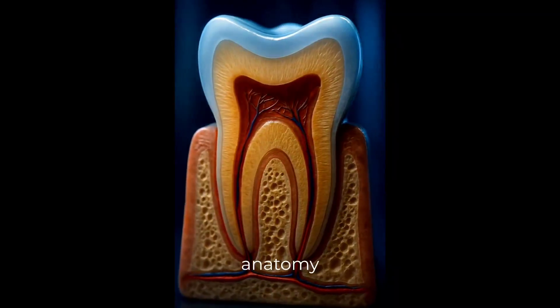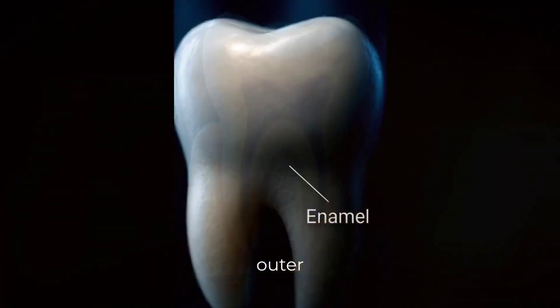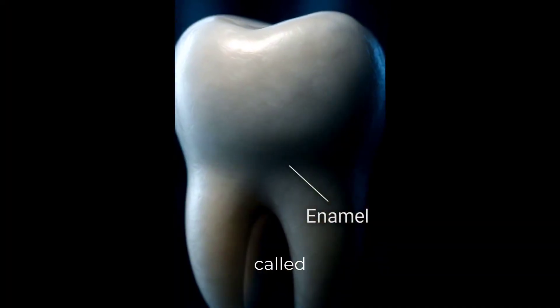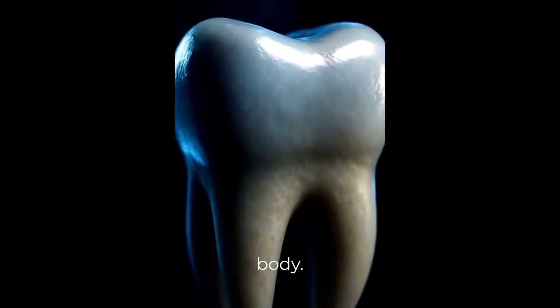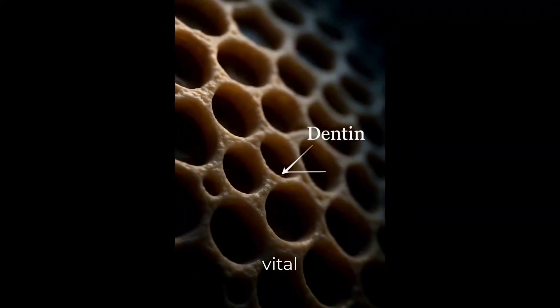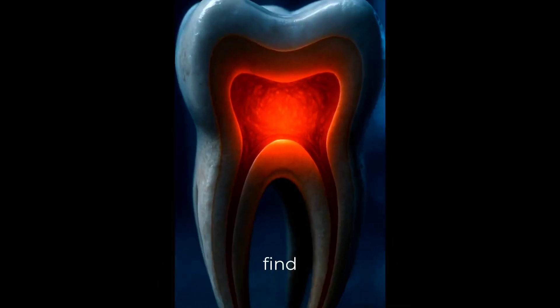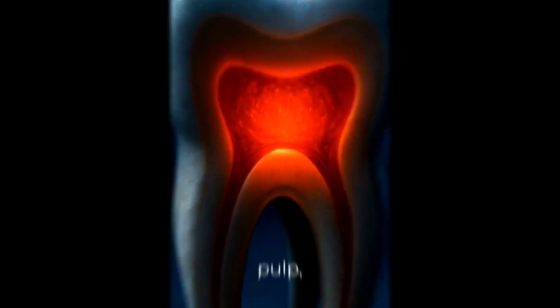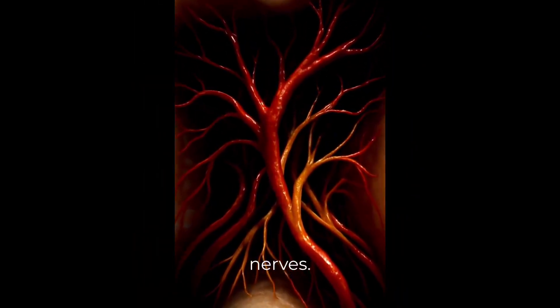Let's explore the anatomy of a healthy tooth. The outer layer, called enamel, is the hardest substance in your body. Beneath it lies the dentin, a softer but vital layer. At the center, we find the pulp, containing blood vessels and nerves.